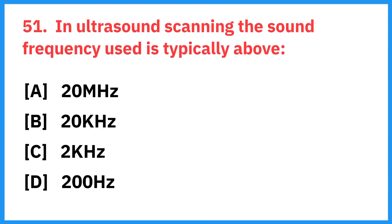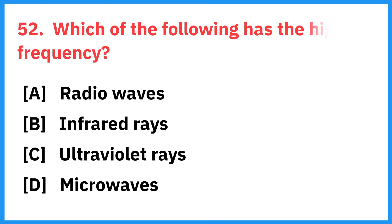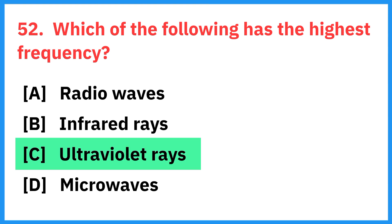In ultrasound scanning, the sound frequency used is typically above — right answer is 20,000 hertz. Which of the following has the highest frequency? Right answer is ultraviolet rays.